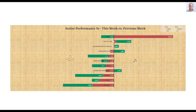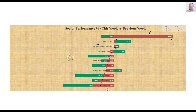This week, 3 sectors are up. Energy is the biggest gainer by far for the week, going up by more than 13%. The 2 other sectors that went up are healthcare — a defensive sector — and information technology, which went up by an even lower percentage. All the other sectors went down by significant percentages. That is the picture of this week versus previous week.